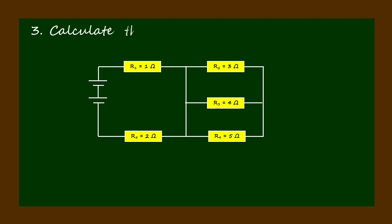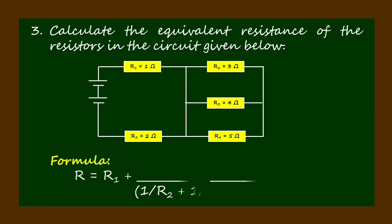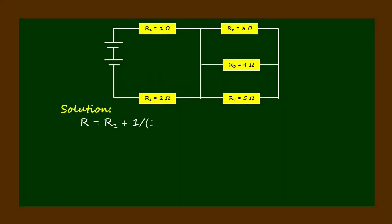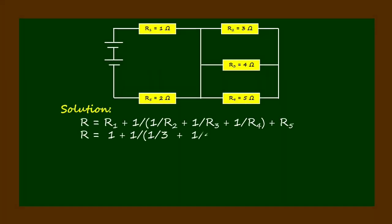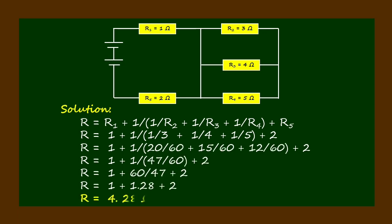Calculate the equivalent resistance of the resistors in the circuit given below. Here is the formula. For the solution, by substituting the given magnitudes of resistances into the formula, we get the equivalent resistance R equal to 4.28 ohms.